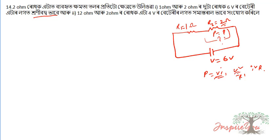We will use the formula P = I²R. So P is equal to I squared times R.